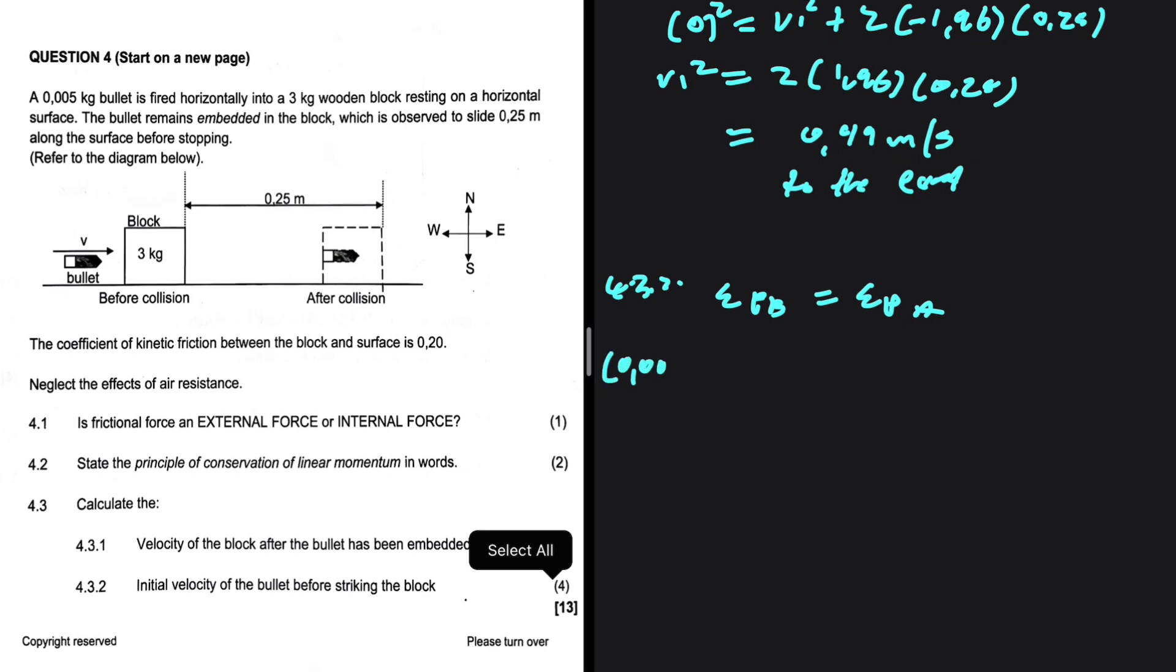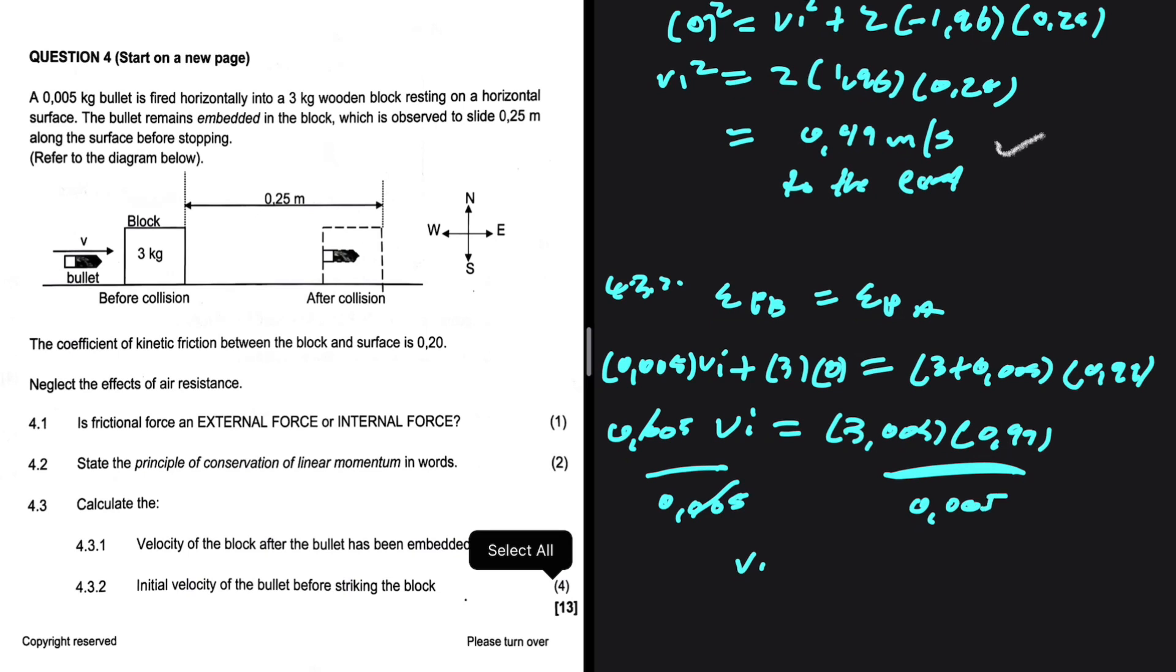For the bullet, we have a mass of 0.005 and an initial velocity we are interested in. For the block, we have a mass of 3 kgs and an initial velocity of 0 because it was at rest. As the bullet gets embedded on the block, we have a mass of 3 plus 0.005 and a velocity of 0.99, which we just calculated in 4.3.1. So 0.005 VI equals 3.005 multiplied by 0.99. We're dividing both sides by 0.005. So VI will be equals to 594.96 meters per second to the east.